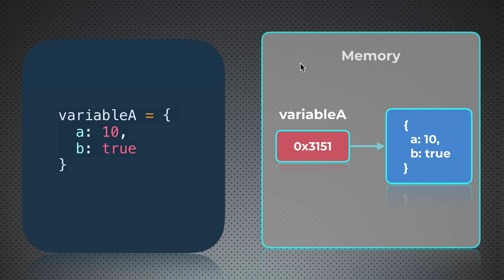And in the memory, variable A will hold pointer, not value itself, just pointer. And value will be located in the separate place in memory. And this pointer will point to this place in memory. Why is this important?